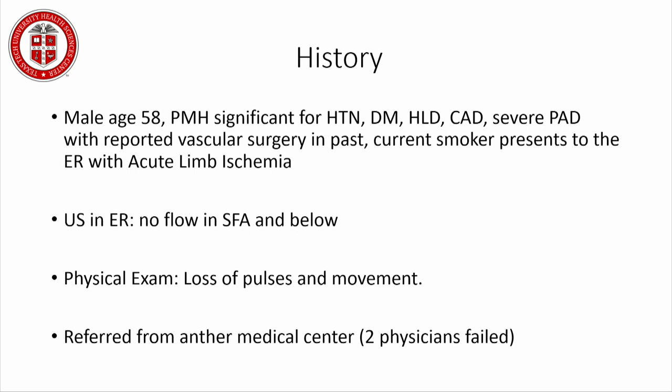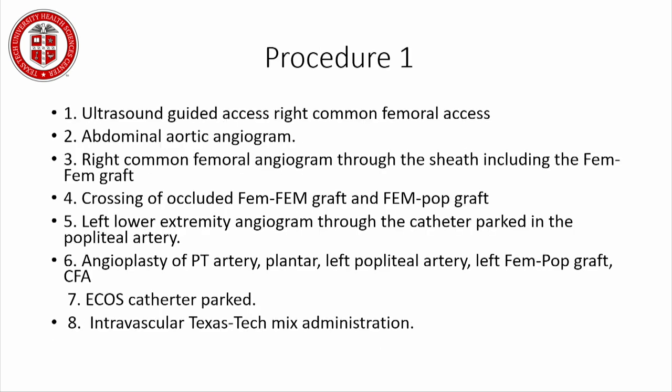The case: a 58-year-old male with hypertension, diabetes, hyperlipidemia, coronary disease, severe PAD, prior vascular surgery, and current smoking presented to the ER with acute limb ischemia. Ultrasound showed no flow in the SFA, and aortoiliac disease was suspected. Physical examination showed no pulses. Referred from another medical center where two physicians had failed to intervene.